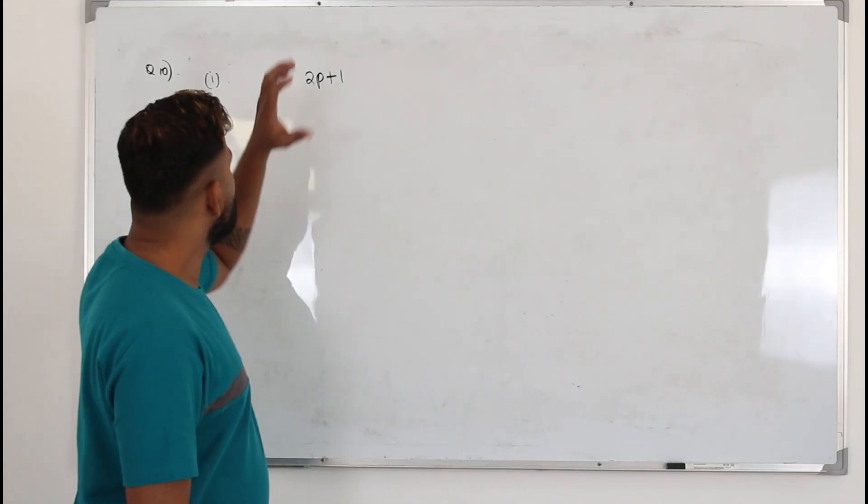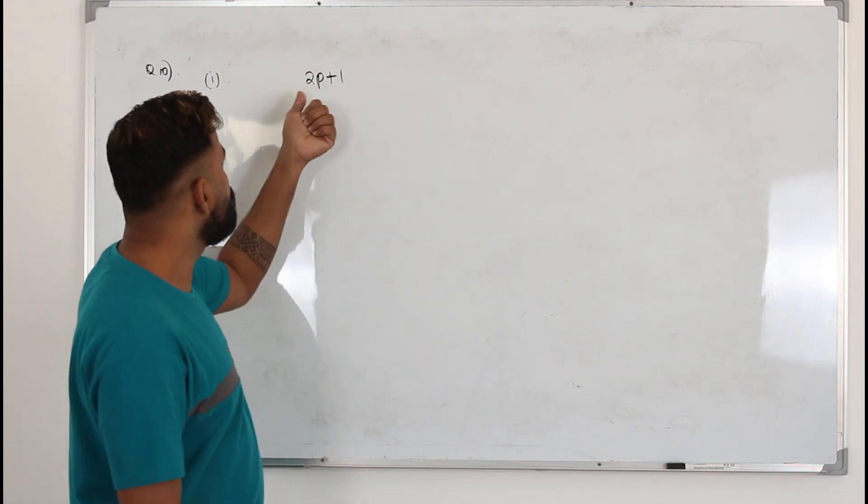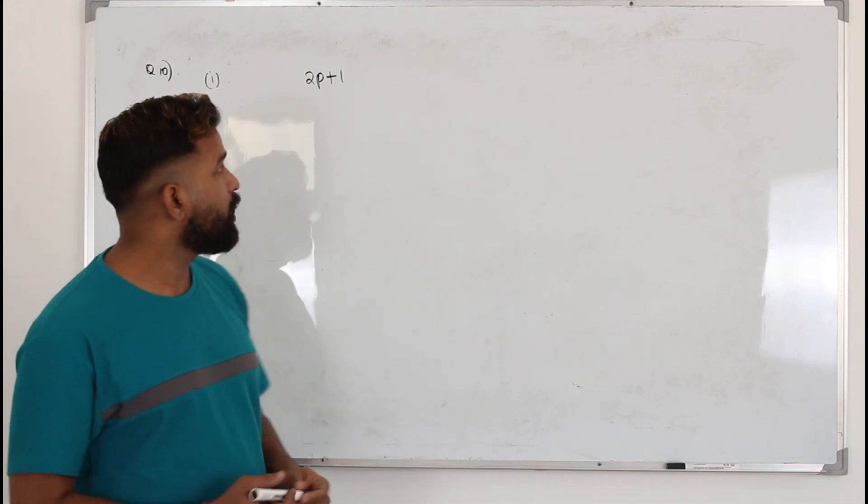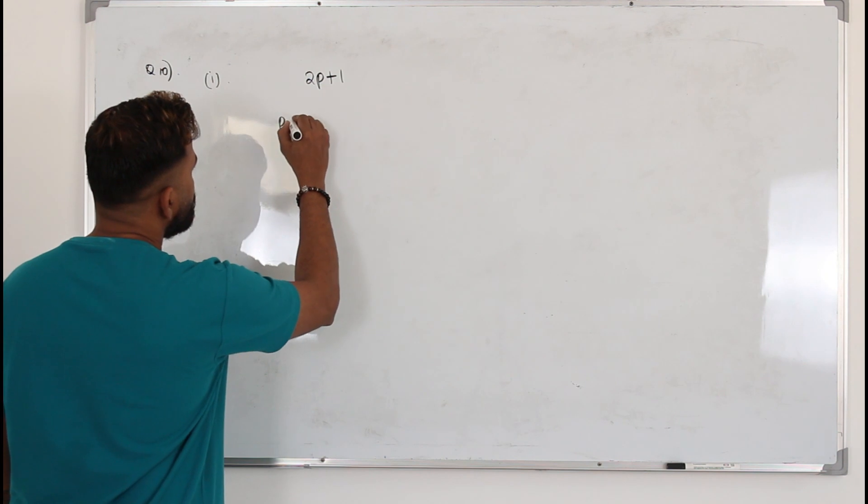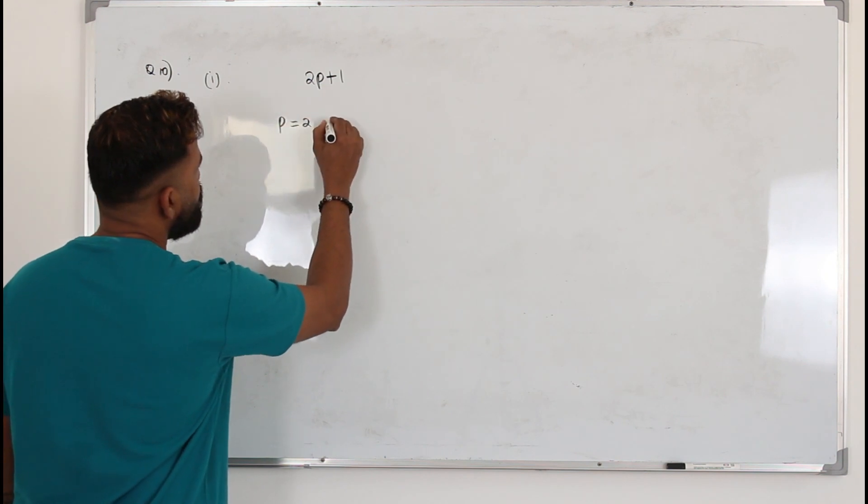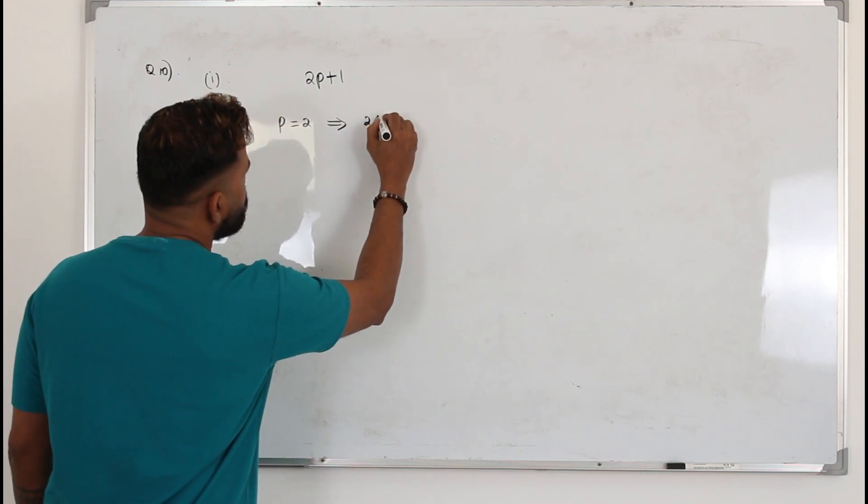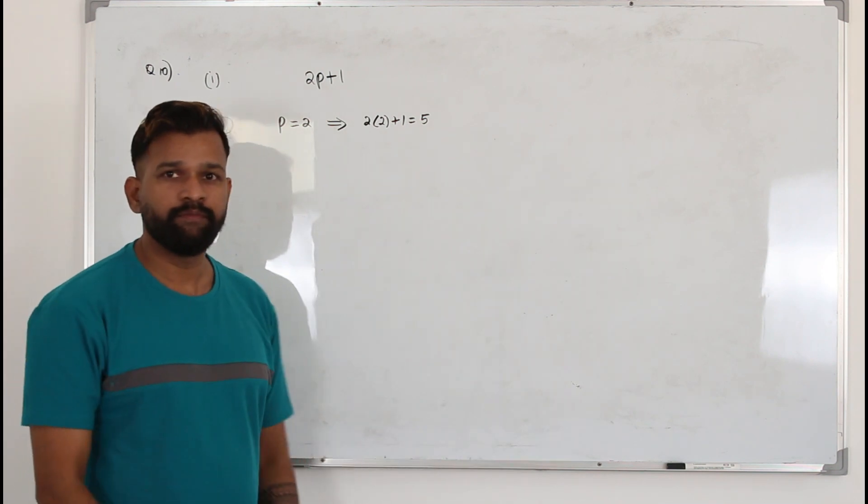Here they want you to prove the statement wrong: if P is prime, then 2P plus 1 is also prime, by taking a counter example. So P should be prime. I'm going to start with P equals 2. If you put it here, 2 times 2 plus 1 equals 5, which is also a prime number.